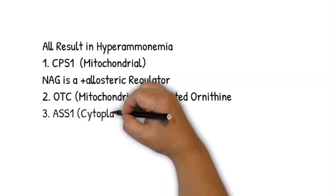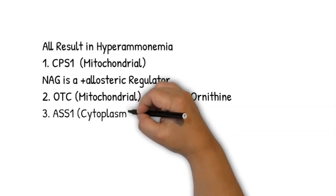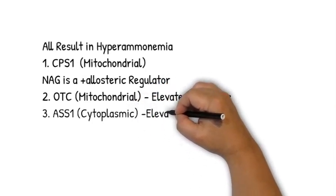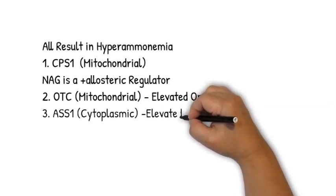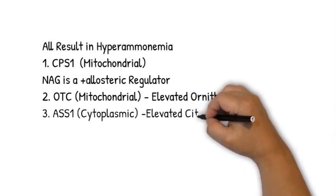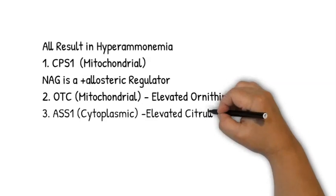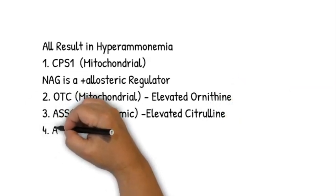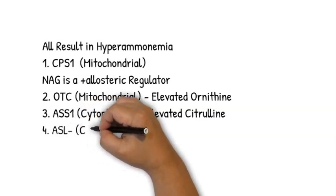Number three: deficiency of ASS1, argininosuccinate synthetase 1. That's a cytoplasmic enzyme. In the deficiency of this enzyme, you are likely to see an elevation of citrulline because that is the substrate on which this enzyme works.